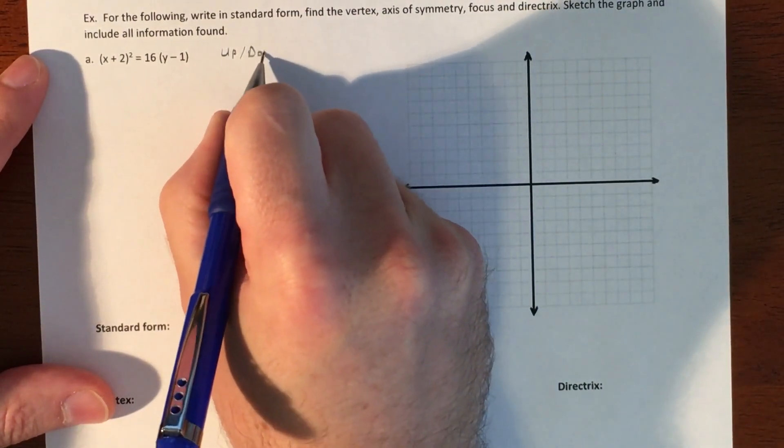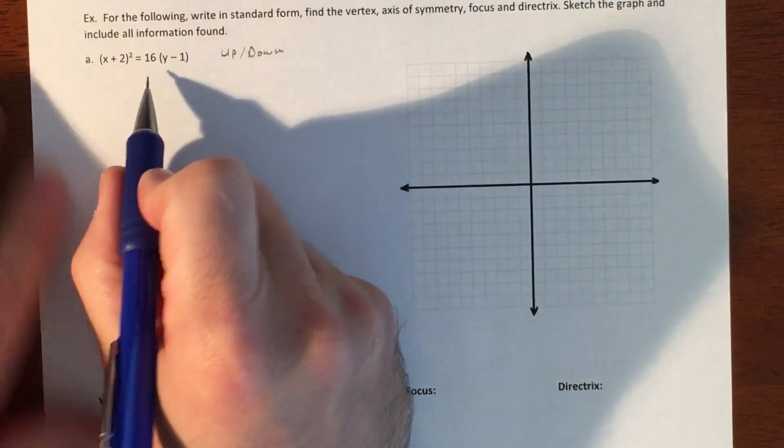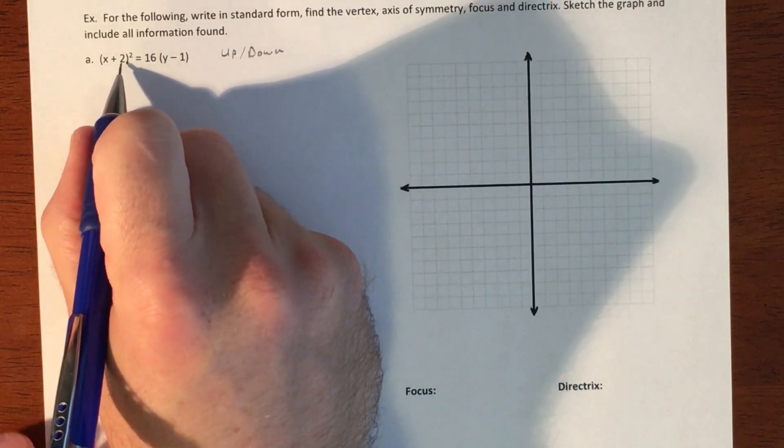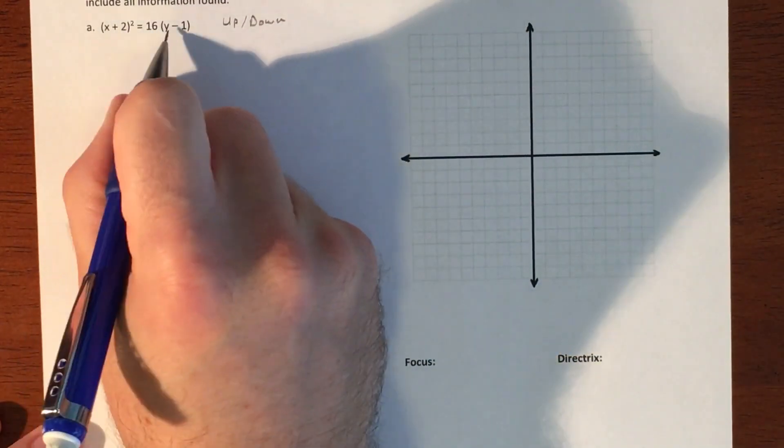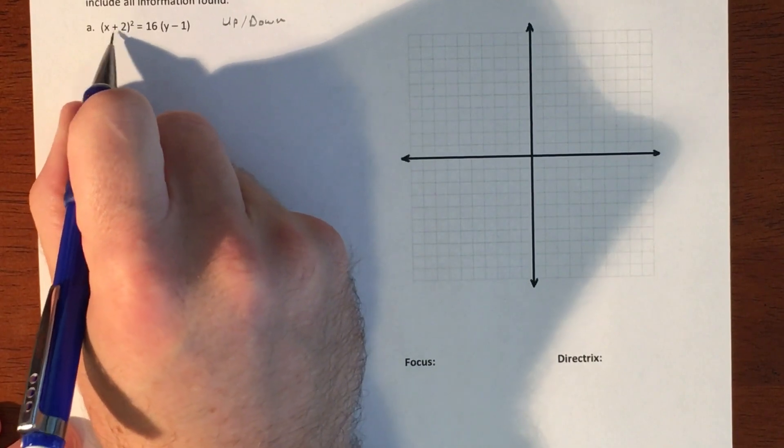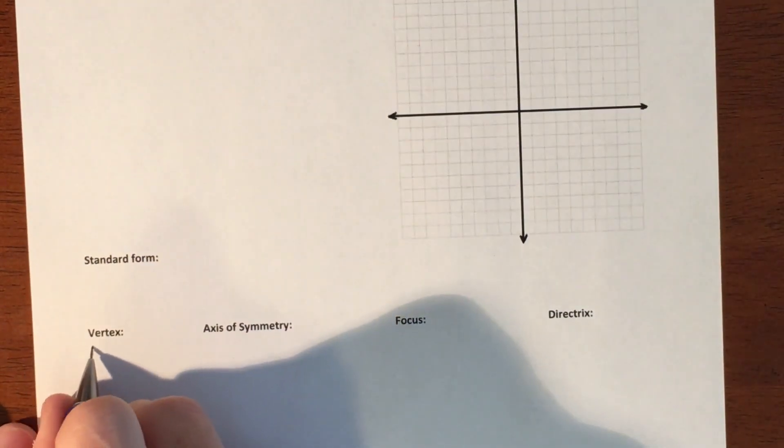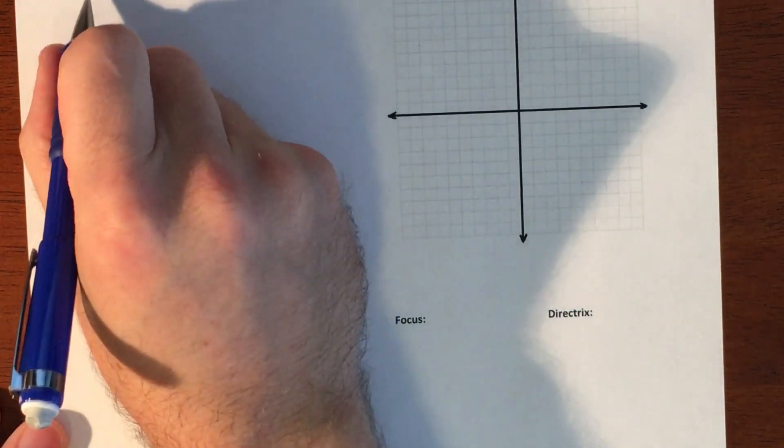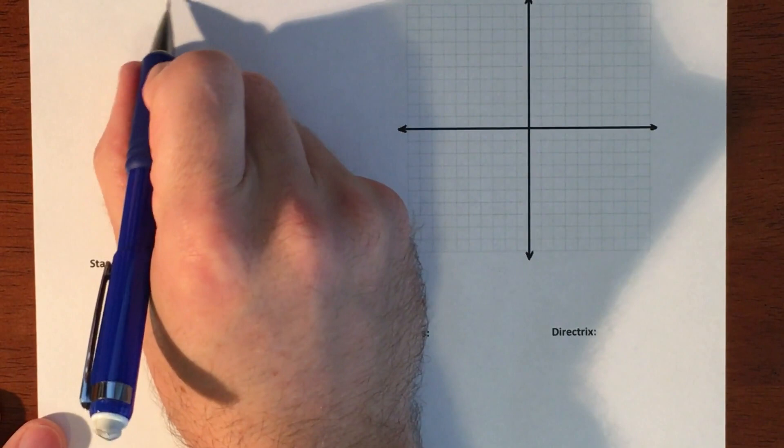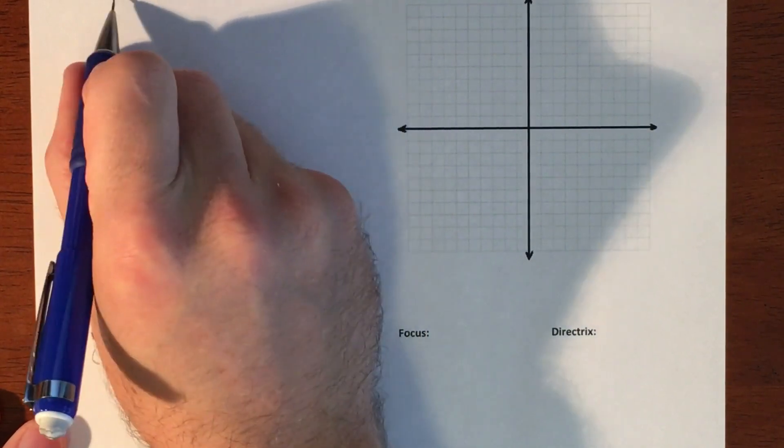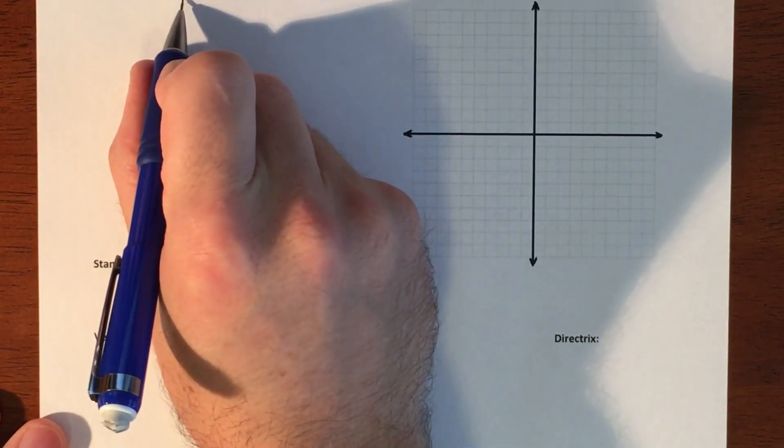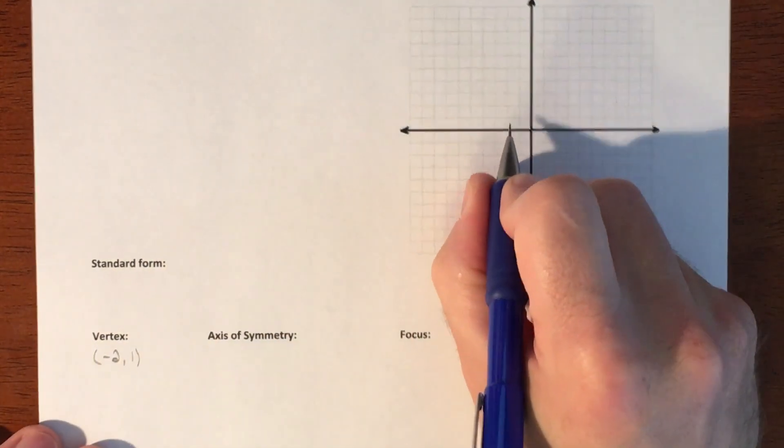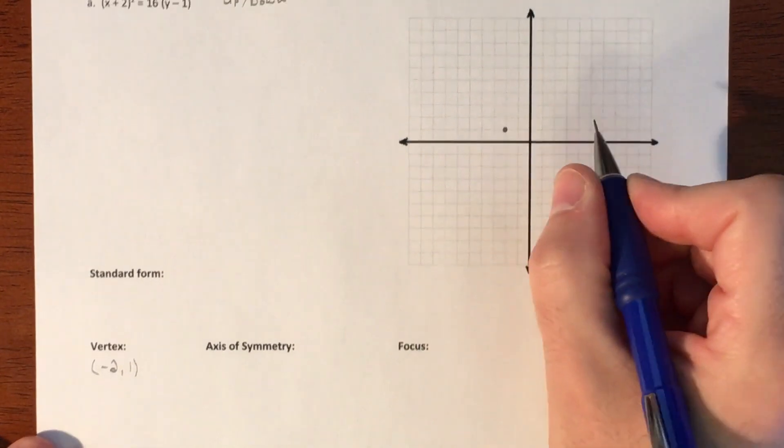A normal-ish parabola. Our h and k, our vertex, is going to be basically directly focused off of this. So it's going to be left two and up one, because anytime we're in the parentheses like this it's going to be opposite on both of them. So we're going to go left two and up one. That is our vertex.